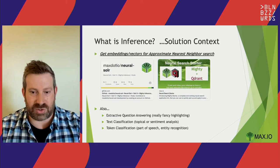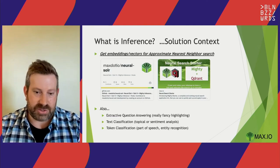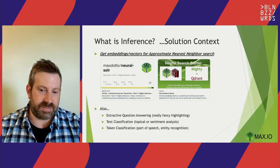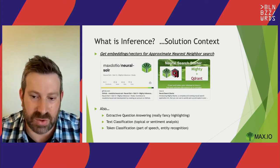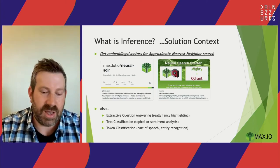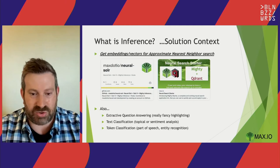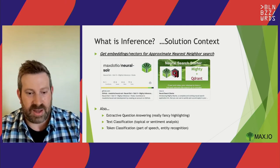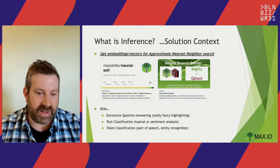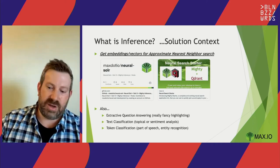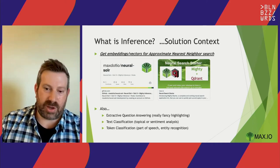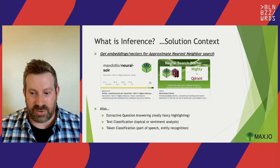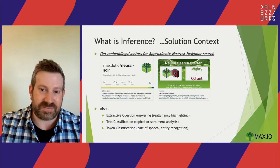There's also a vector search engine called Qdrant, which is open source and written in Rust, and another starter kit that lets you use Mighty in coordination with Qdrant. There are other use cases too: extractive question answering — what I like to call really fancy highlighting — text classification, token classification, and a whole bunch more. These inference tasks tend to be quite slow and bulky, so that's why I'm here today.